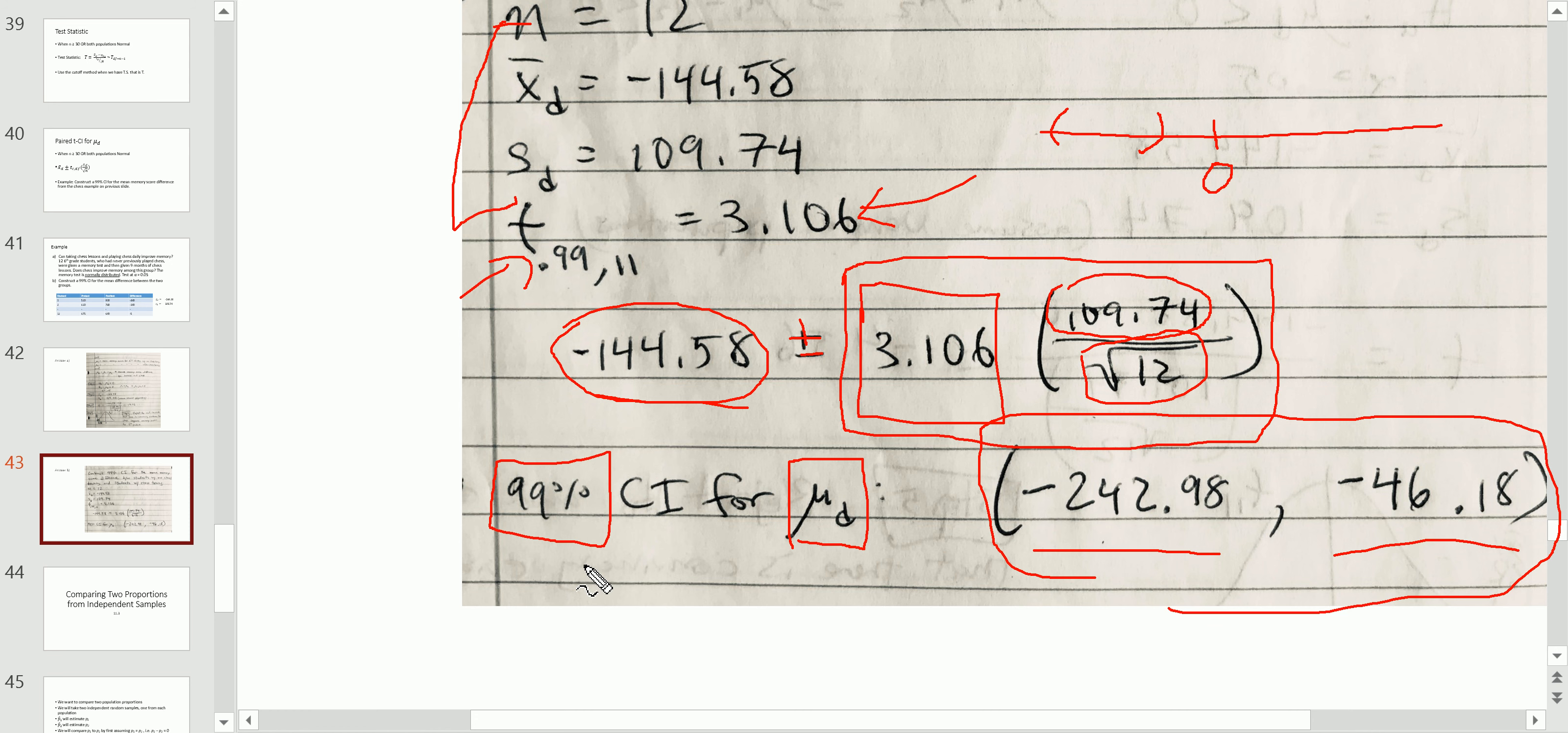So what we can conclude here is that we're 99% sure that the difference, average difference, was negative, i.e. chess improved memory skills.